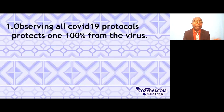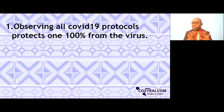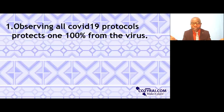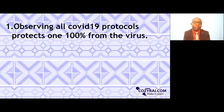Let's look at some examples of syllogism. Example one — the major premise says: observing all COVID-19 protocols protects 100% from the virus. This is not a scientific fact, but we are taking this as just an example for this discussion, so let's assume it is absolutely true. Major premise: observing all COVID-19 protocols protects 100% from the virus.